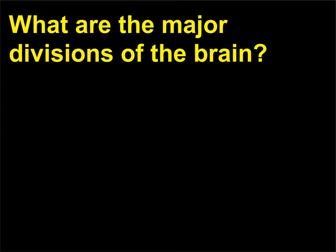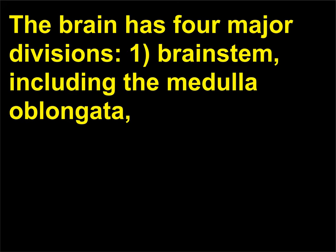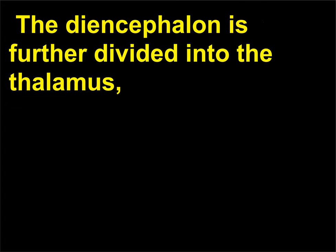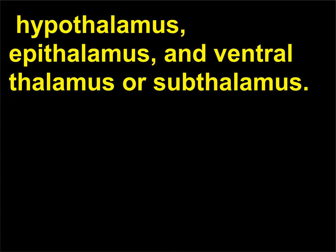What are the major divisions of the brain? The brain has four major divisions: (1) the brainstem, including the medulla oblongata, pons, and midbrain; (2) the cerebellum; (3) the cerebrum; and (4) the diencephalon. The diencephalon is further divided into the thalamus, hypothalamus, epithalamus, and ventral thalamus or subthalamus.